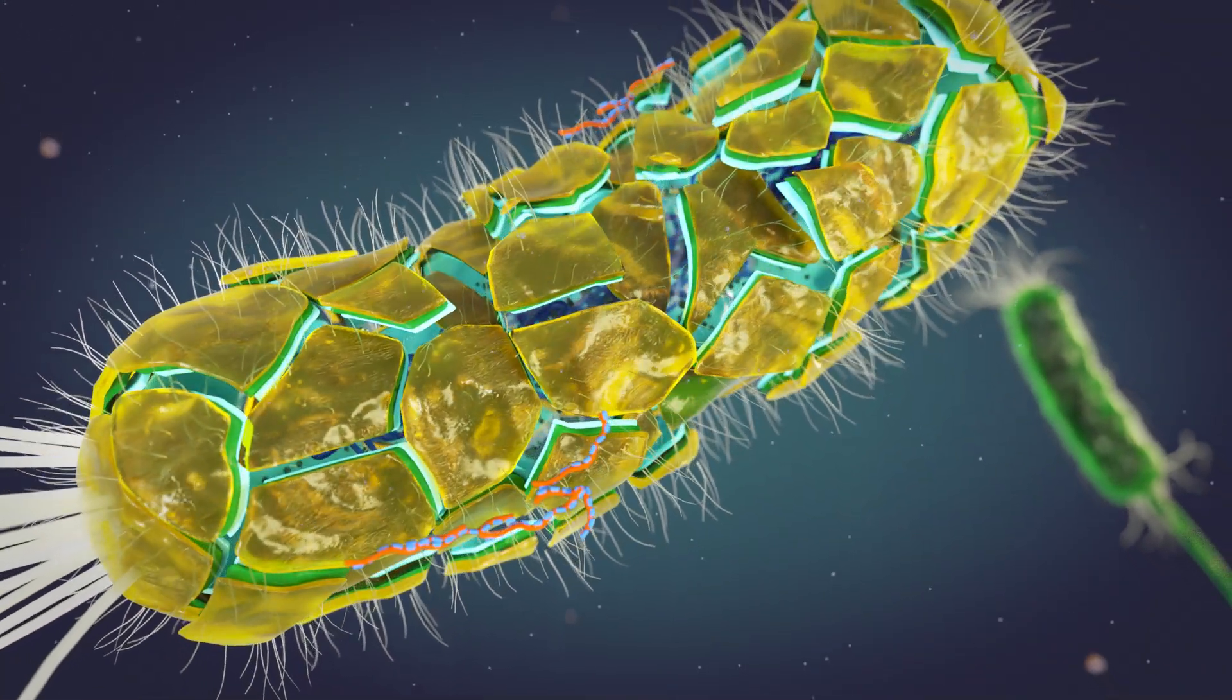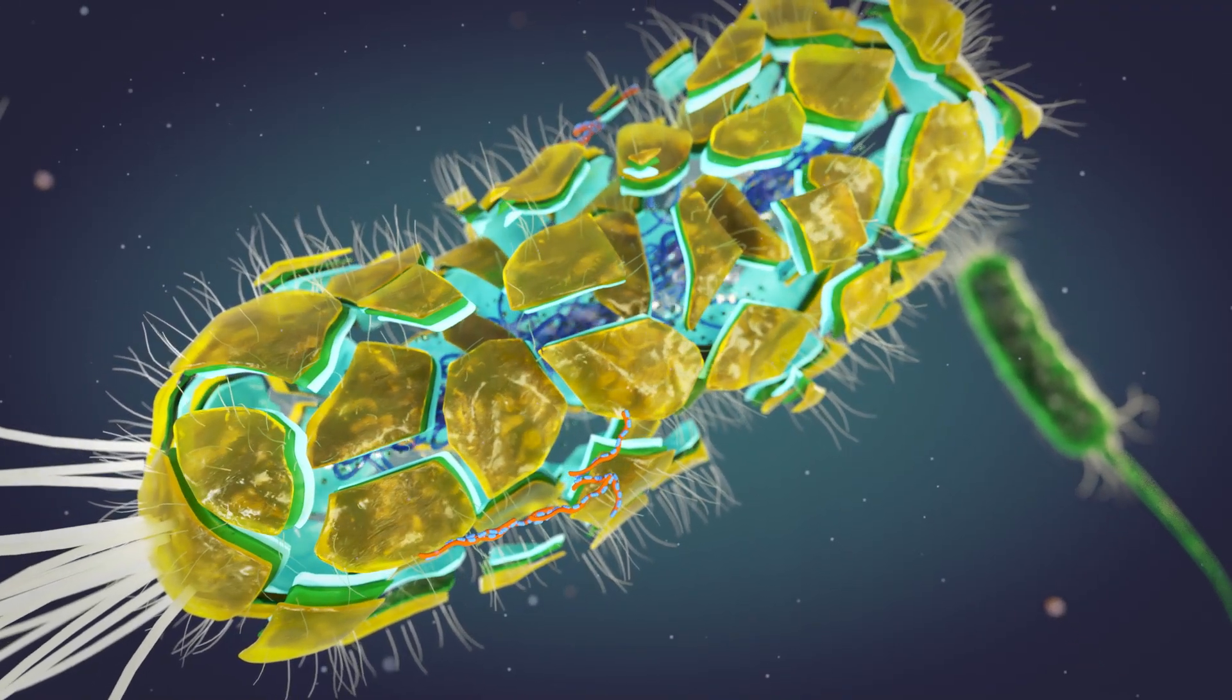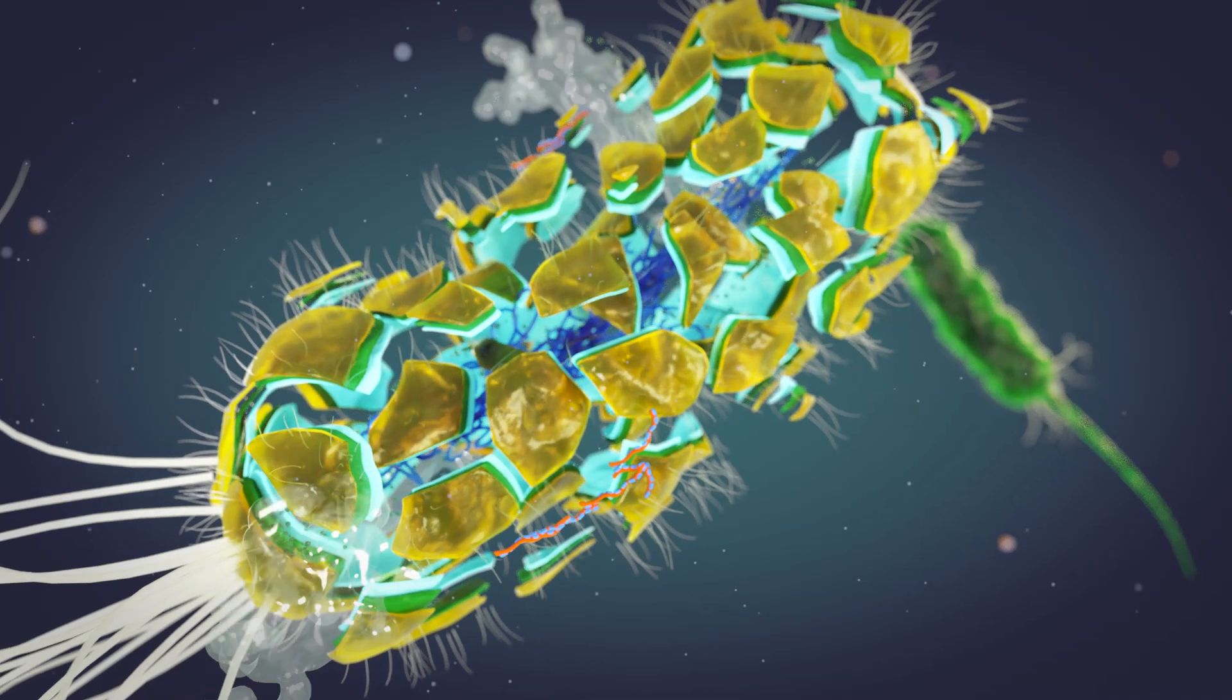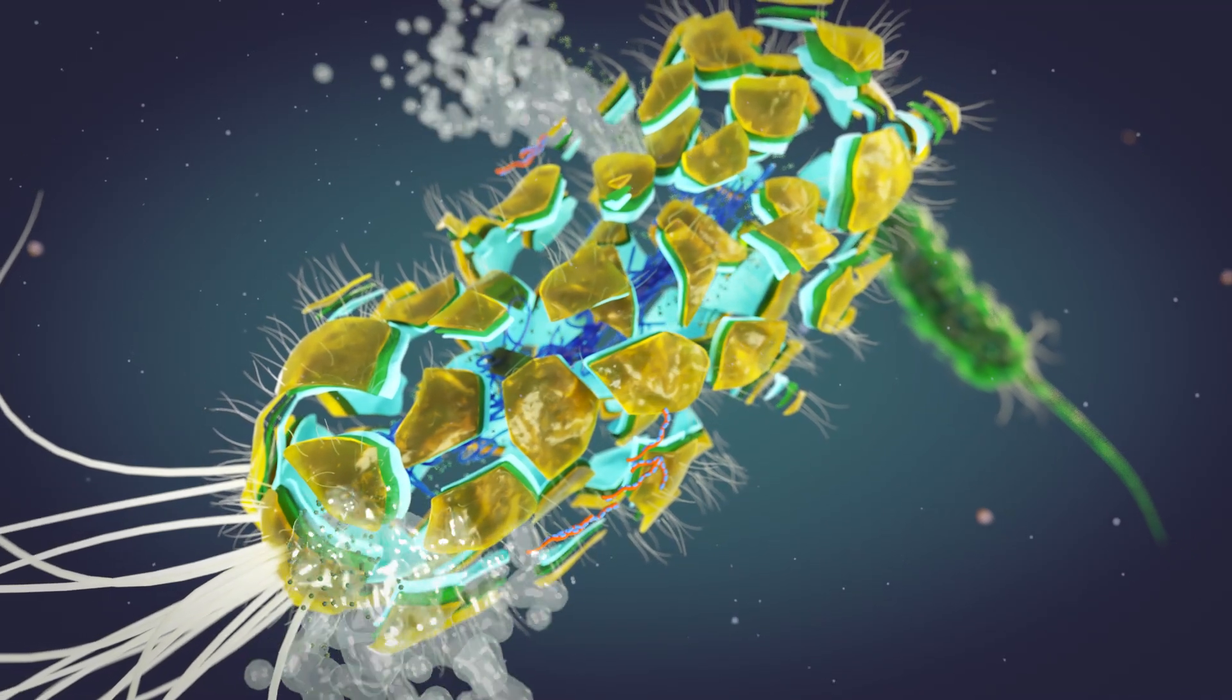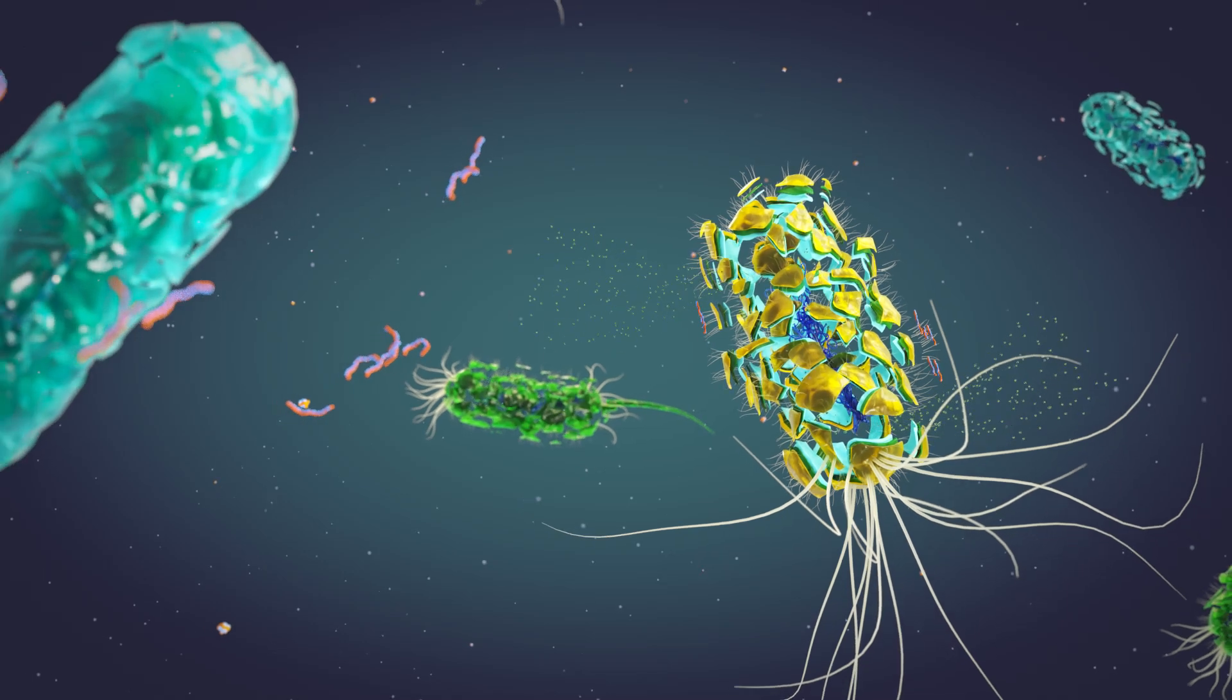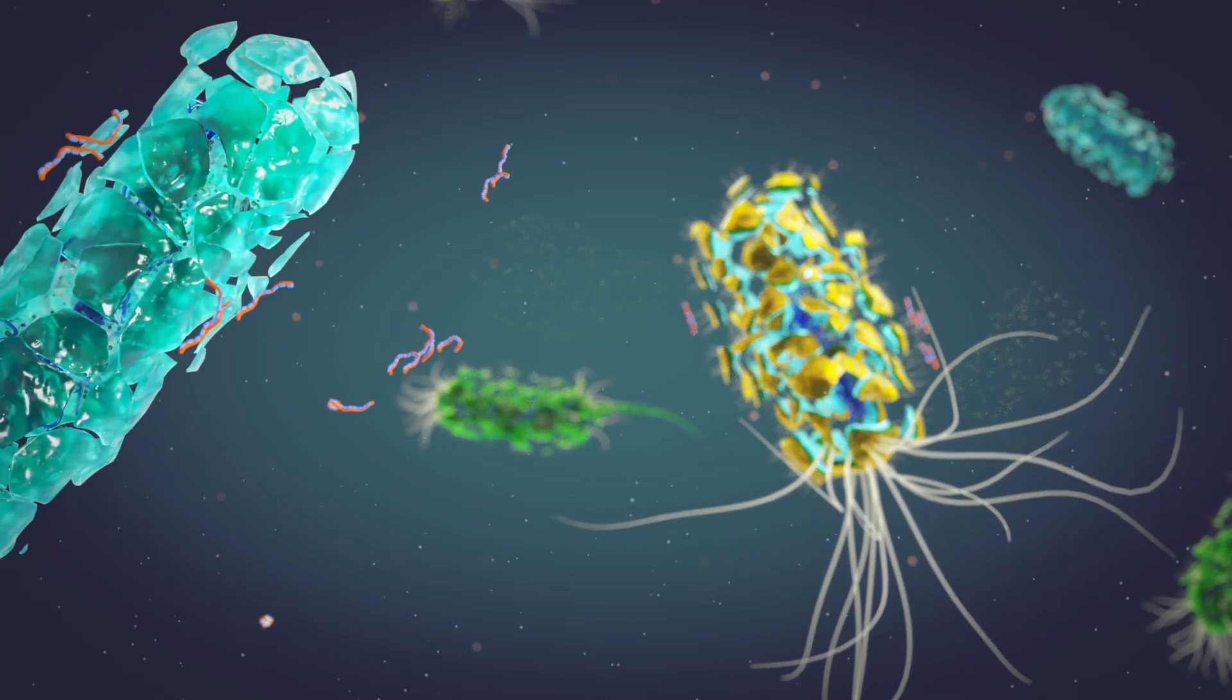The cell wall breaks open and begins to leak where the PHMB molecules attack. This results in the cytoplasm exiting the cell, which quickly causes the bacteria to die. PHMB attacks, breaks down, and destroys bacteria.